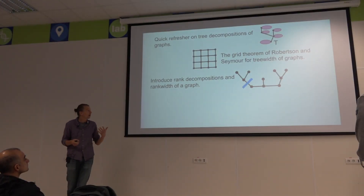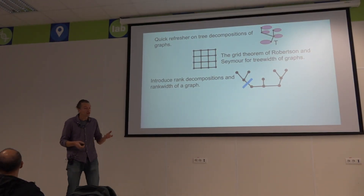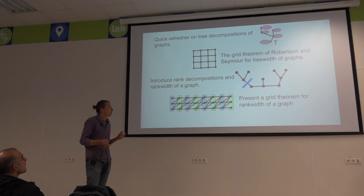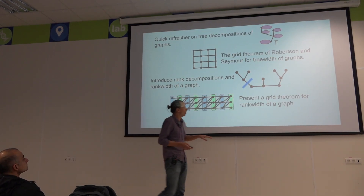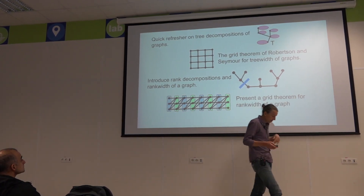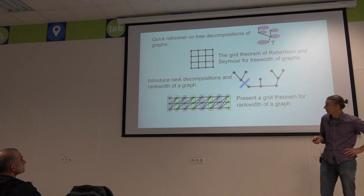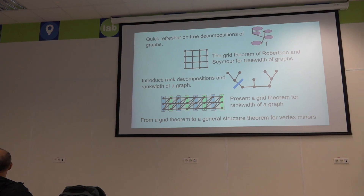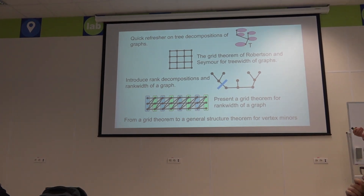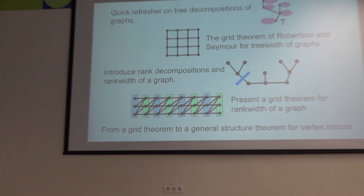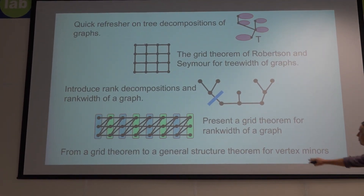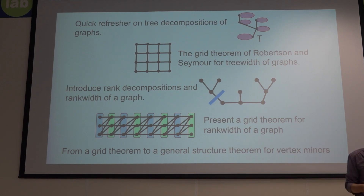I'm going to give a quick refresher on tree decompositions of graphs and look at the Robertson-Seymour grid theorem for graphs of bounded tree width, before moving on to the analogues for vertex minors. That is, we'll look at rank decompositions and the rank width of a graph. Then I want to present a grid theorem for rank width within the context of vertex minors.